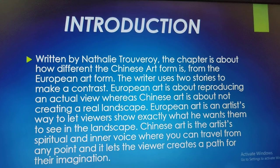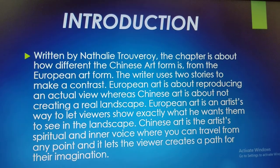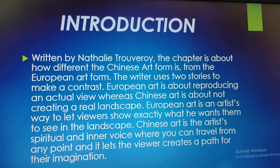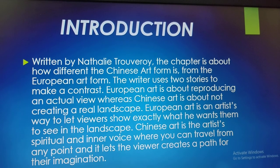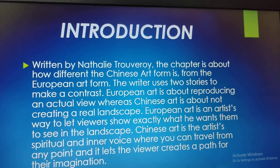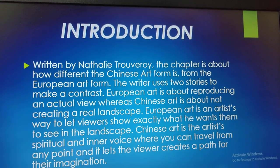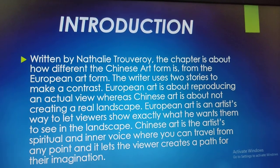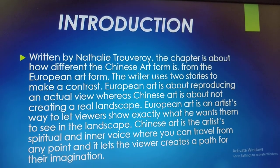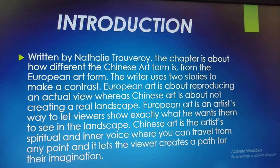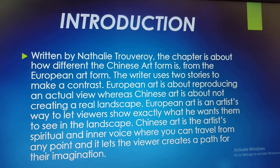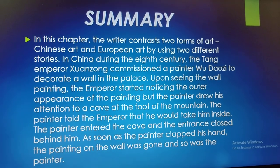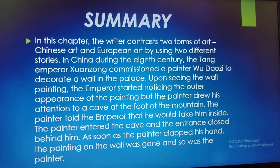Written by Nathalie Troveri, the chapter is about how different the Chinese art form is from the European art form. The writer uses two stories to make a contrast. European art is about reproducing an actual view, whereas Chinese art is about not creating a real landscape. In this chapter, the writer contrasts the two forms of art — Chinese and European — by using two different stories.